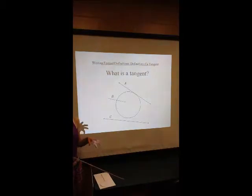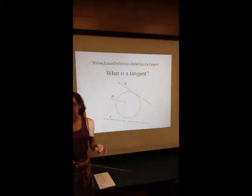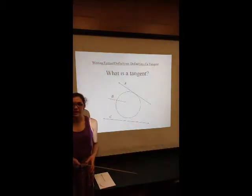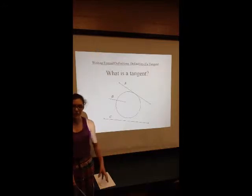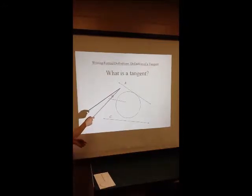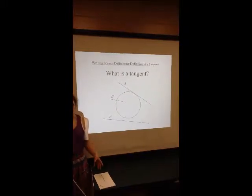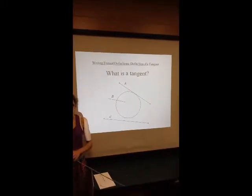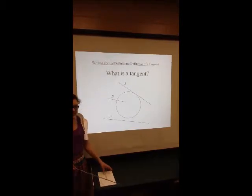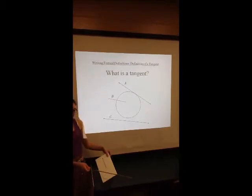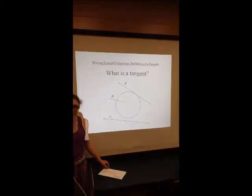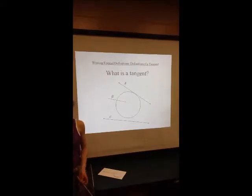Instead, we're going to define a tangent as a line that hits a circle at one point and is in the same plane as the circle. Example A fits the definition perfectly. We almost defined an incorrect figure as a tangent, which is why specific definitions matter — and we're going to do the same thing for limits.